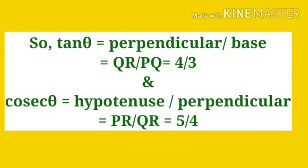Now, tan theta equals perpendicular by base, where perpendicular is the side opposite to angle theta and base is the adjacent side. So tan theta equals QR by PQ, which is four by three. Cosec theta equals hypotenuse by perpendicular. The hypotenuse is PR and the perpendicular, the side opposite to theta, is QR. So cosec theta equals PR by QR, as seen from the figure, which gives cosec theta equal to five by four.